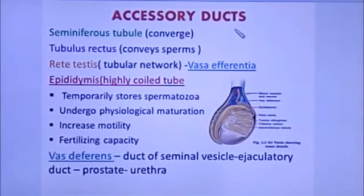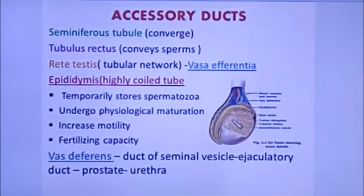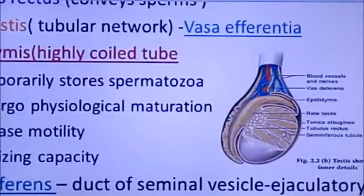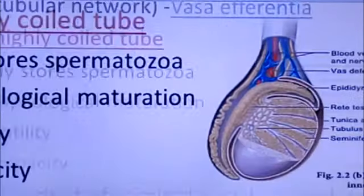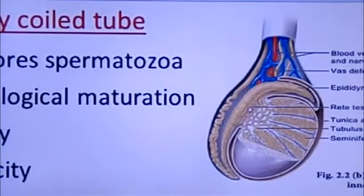The accessory ducts include the seminiferous tubules. From all the lobules, the seminiferous tubules converge at one point and are then called tubulus rectus. These tubulus rectus then convey the sperms to a place called rete testis.